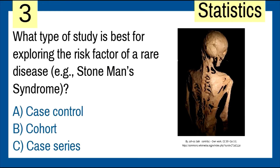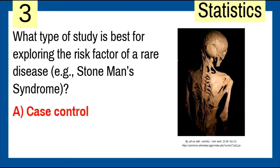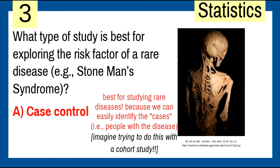Third concept: what type of study is best for exploring the risk factor of a rare disease? For example, Stone Man's Syndrome — a condition where a person's muscles literally turn into bone, occurring in one in every million people. The answer is case-control. Case-control is great for rare diseases. Trying to find such cases with a cohort study would basically be impossible.